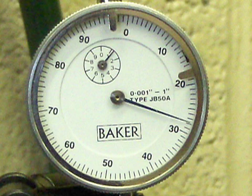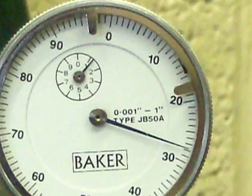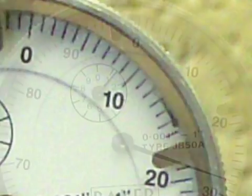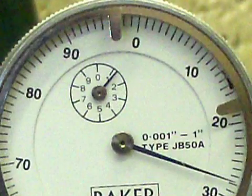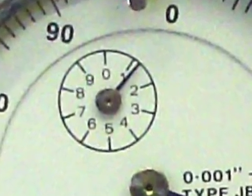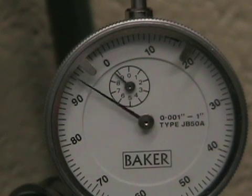There are two scales on the dial indicator. The outer scale is marked in one thousandths of an inch increments and each tenth number is marked to make reading easier. The small inner scale is numbered one through nine and each number represents one hundred thousandths of an inch. For each complete revolution of the outer scale, the small inner scale moves one number up or down.